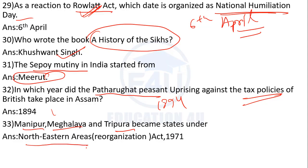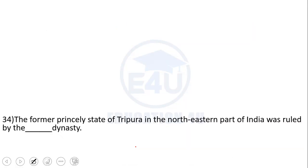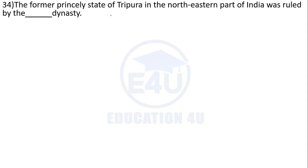Meghalaya, Tripura, and Manipur became states under the North Eastern Areas Reorganization Act 1971. So in 1971 this act was passed.